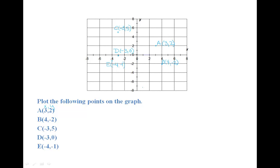Point A is in the first quadrant. Point B is in the fourth quadrant. Point C is in the second quadrant. Point D is on the x-axis, and point E is in the third quadrant.